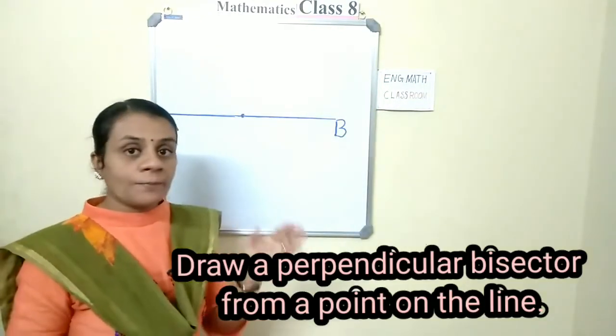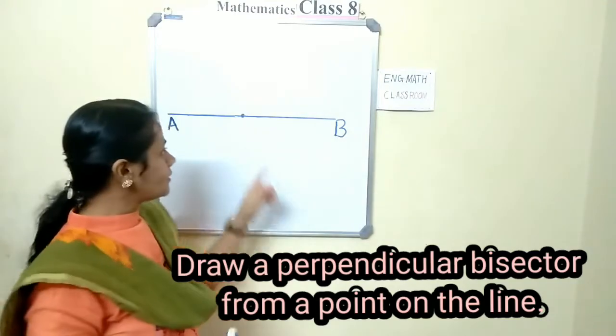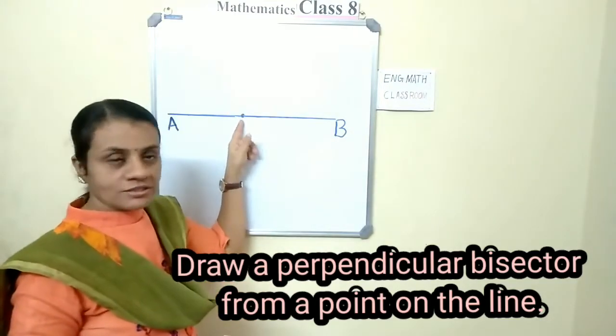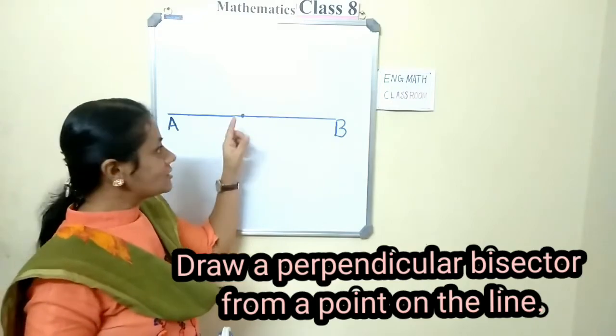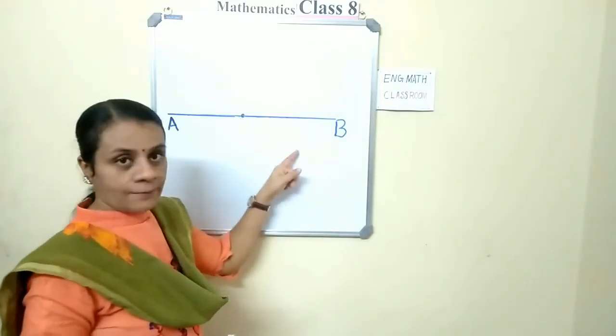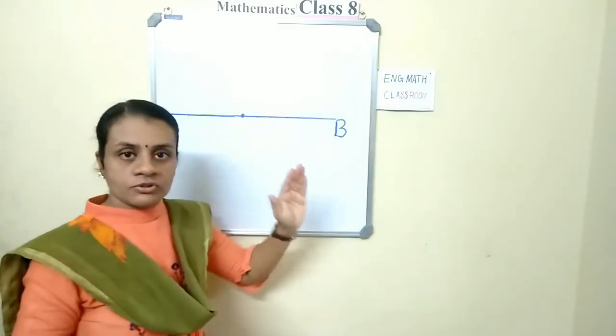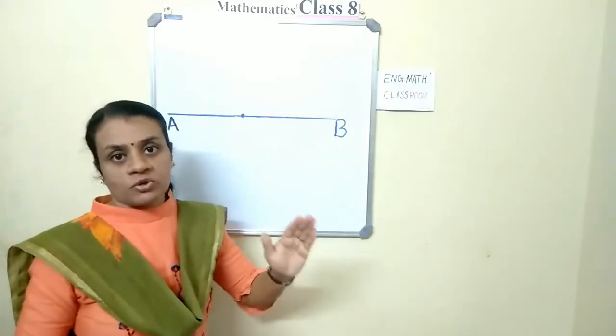Next is, how to draw a perpendicular bisector from a point on the line. This is a point on AB. From here, you have to draw a perpendicular bisector.